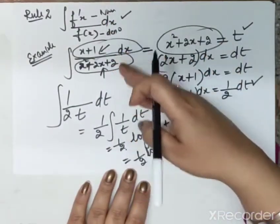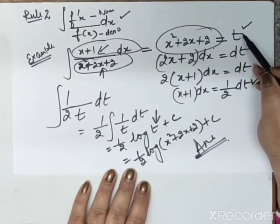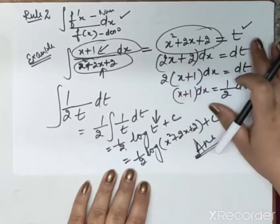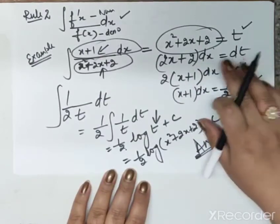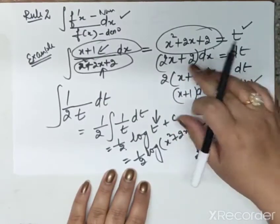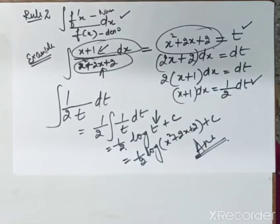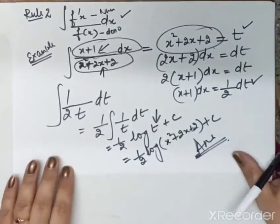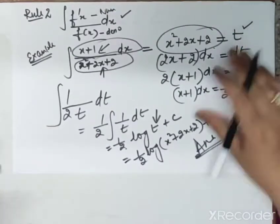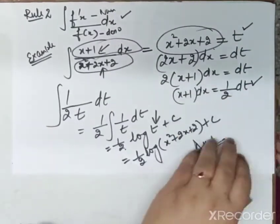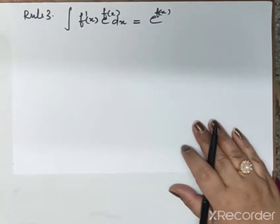So this will be our answer. The procedure is the same throughout: we put the main function as t, take its derivative to convert dx into dt form, substitute the values, and we get our answer. This is Rule 2.